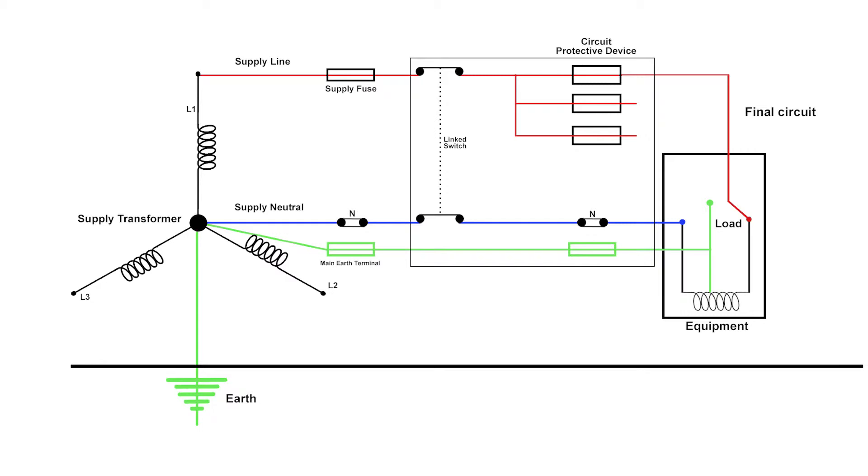As I said before, this is a TNS system and the earth is completely separate throughout the whole of the system. The earthing system is there to protect us if there's a problem and we have a fault.